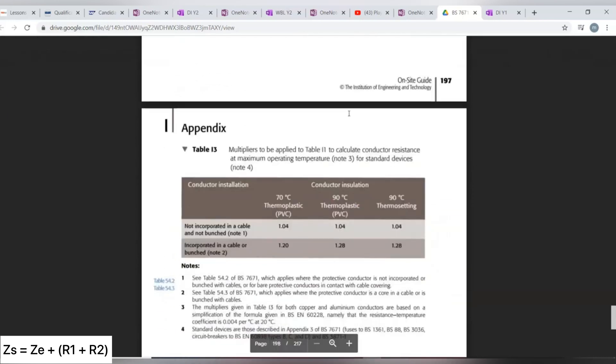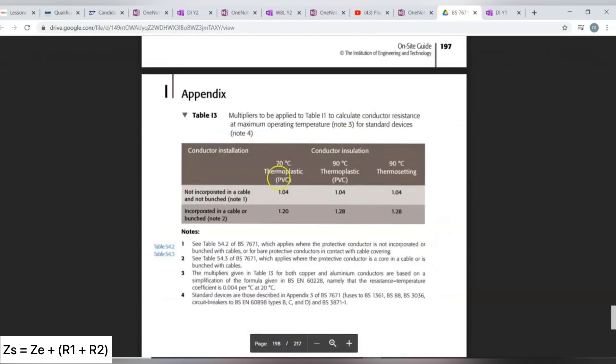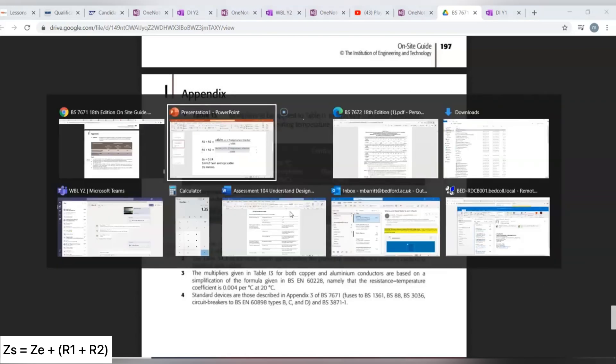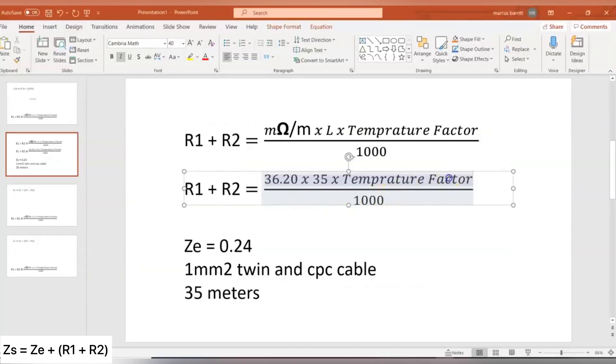Now, when we come to table I3, remember now we're on a twin and CPC cable again, therefore it is incorporated in a cable, thermoplastic, and gives us a factor of 1.20. So when we go to here, that again is going to be 1.20.